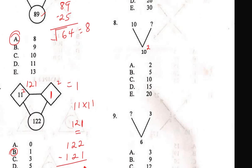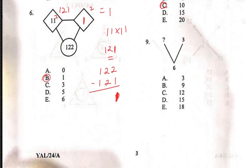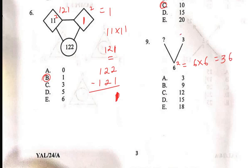For Question 8: 10² = 10 × 10 = 100, and it must match what's on top — 10 × 10 = 100 as well, so the missing value is option C, which is 10. For Question 9: 6² = 6 × 6 = 36. What is missing? 36 divided by 3 is 12, so that 12 × 3 = 36 as well. The answer is 12, option C.